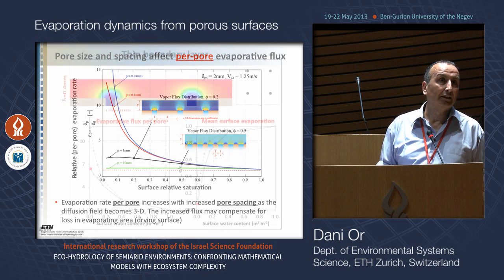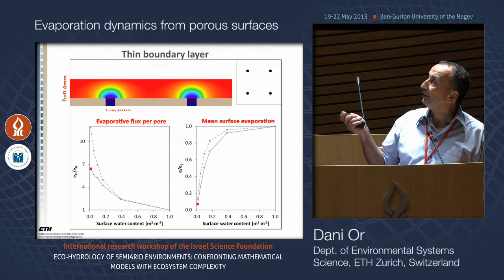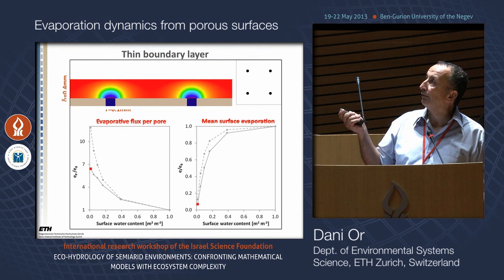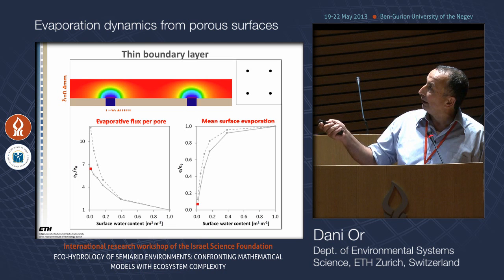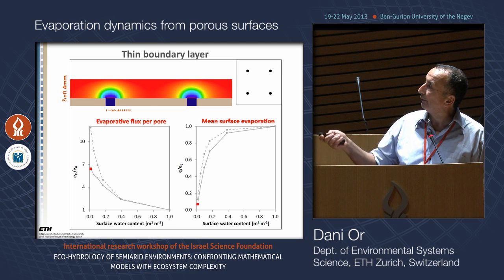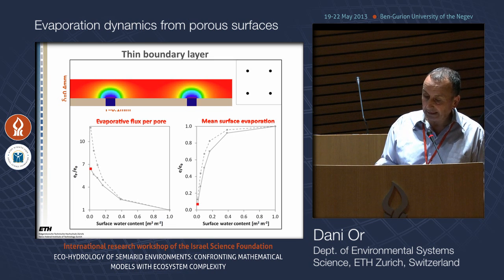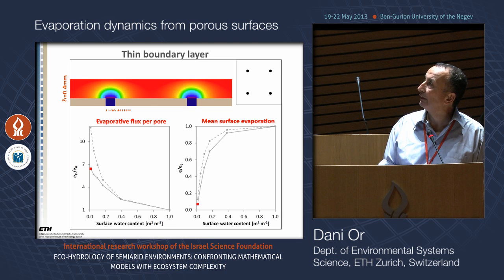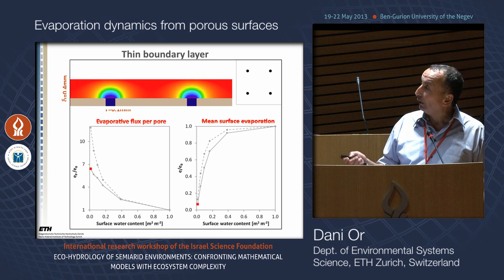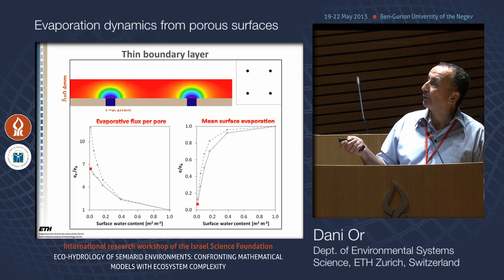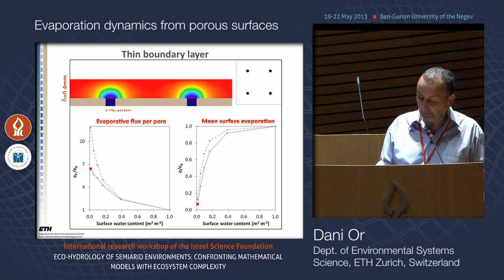We solved the three-dimensional diffusion over a surface made up of pores of 100 microns in a boundary layer of 400 microns. As I increase the spacing between pores, the diffusion field evolves from one-dimensional to three-dimensional, and the evaporation per pore increases. Of course, with very few pores remaining, the product of flux per pore times number of pores does not fully compensate, so there is a net drop in overall evaporation rate from the surface.